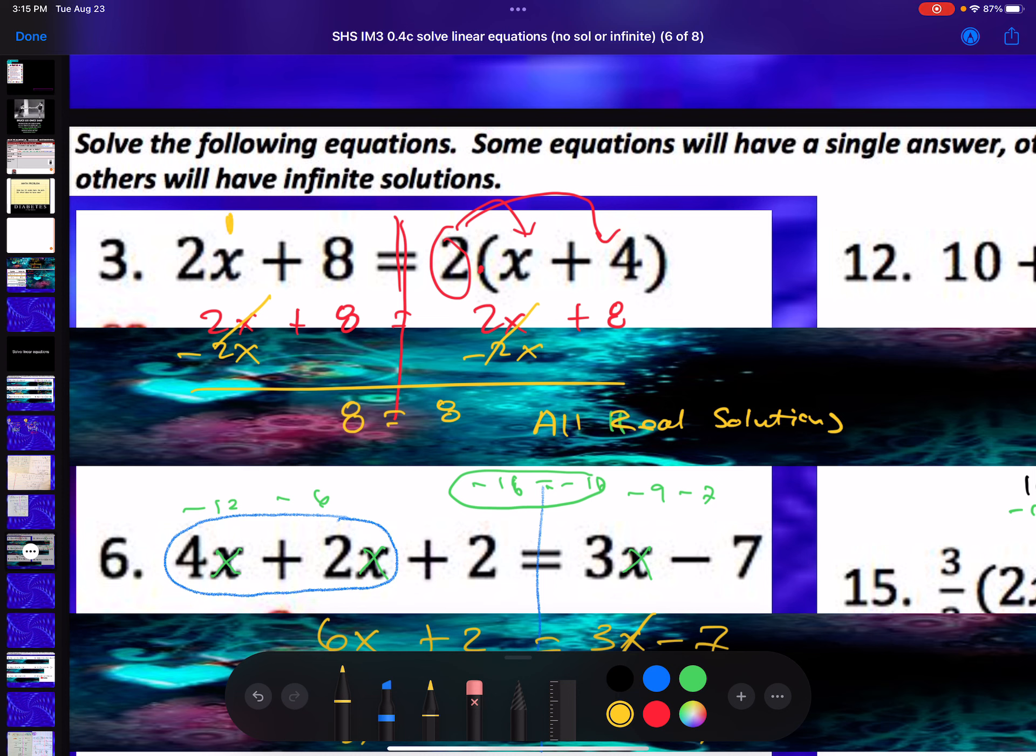Because I can put in 1 here, 2 times 1 is 2, 2 plus 8 is 10. I put in 1 here, 1 plus 4 is 5, 2 times 5 is 10. Make sense? Yeah.